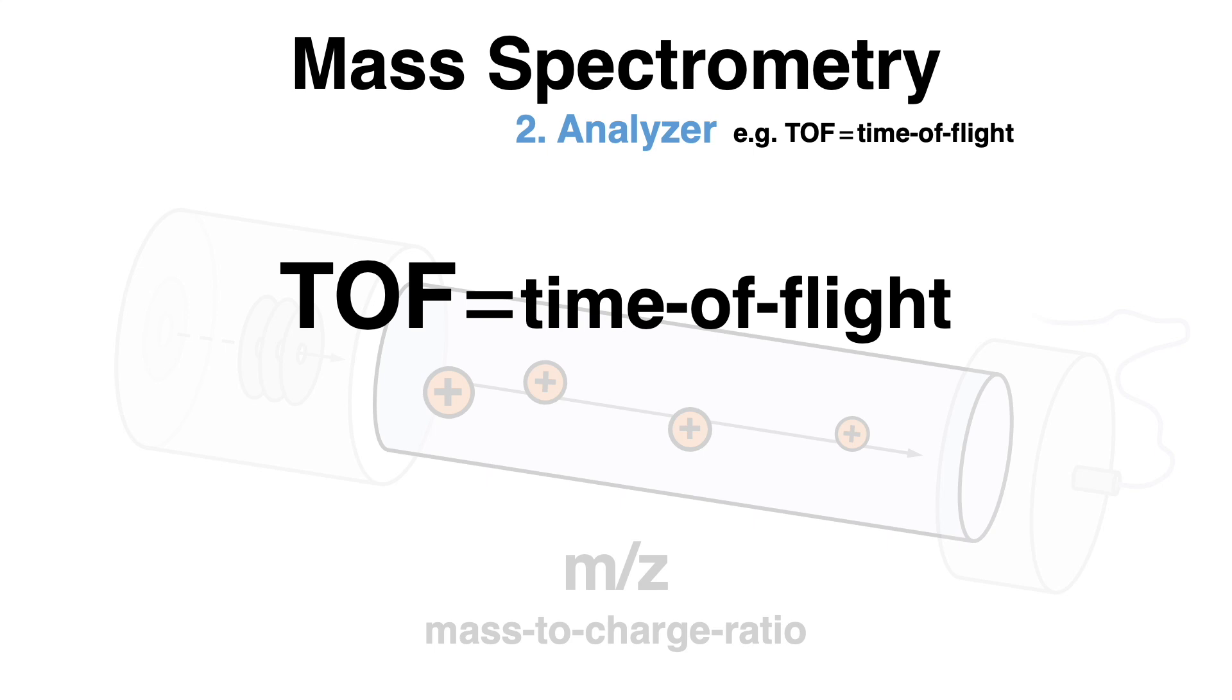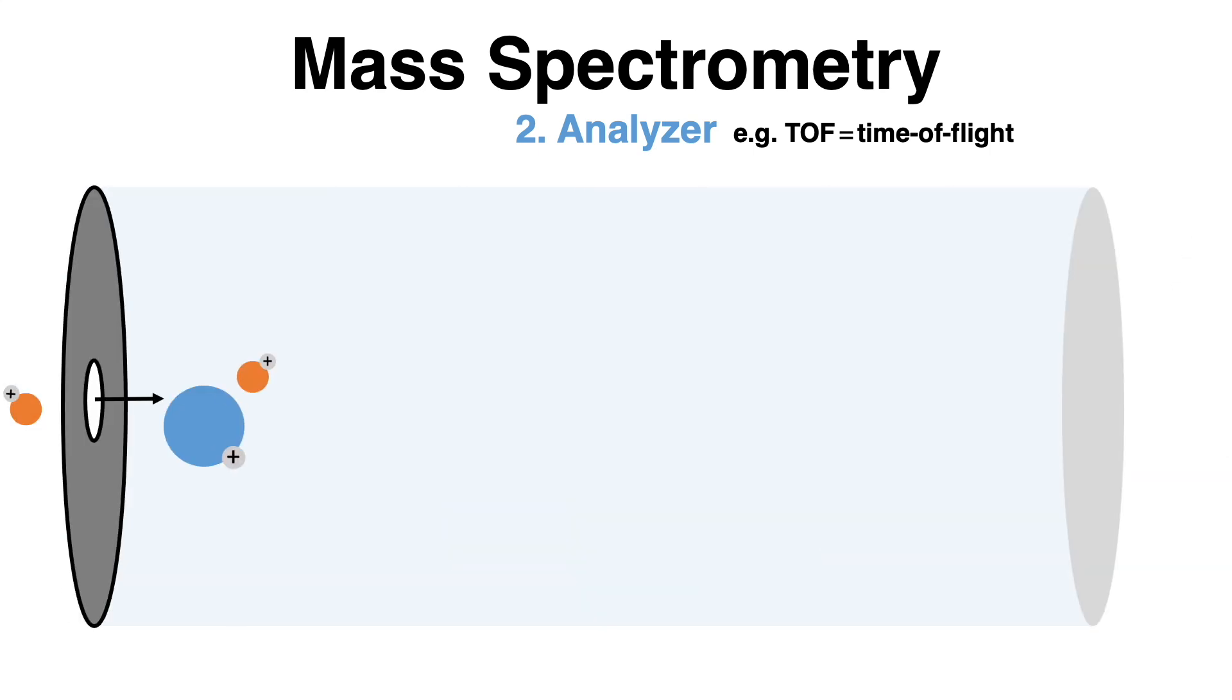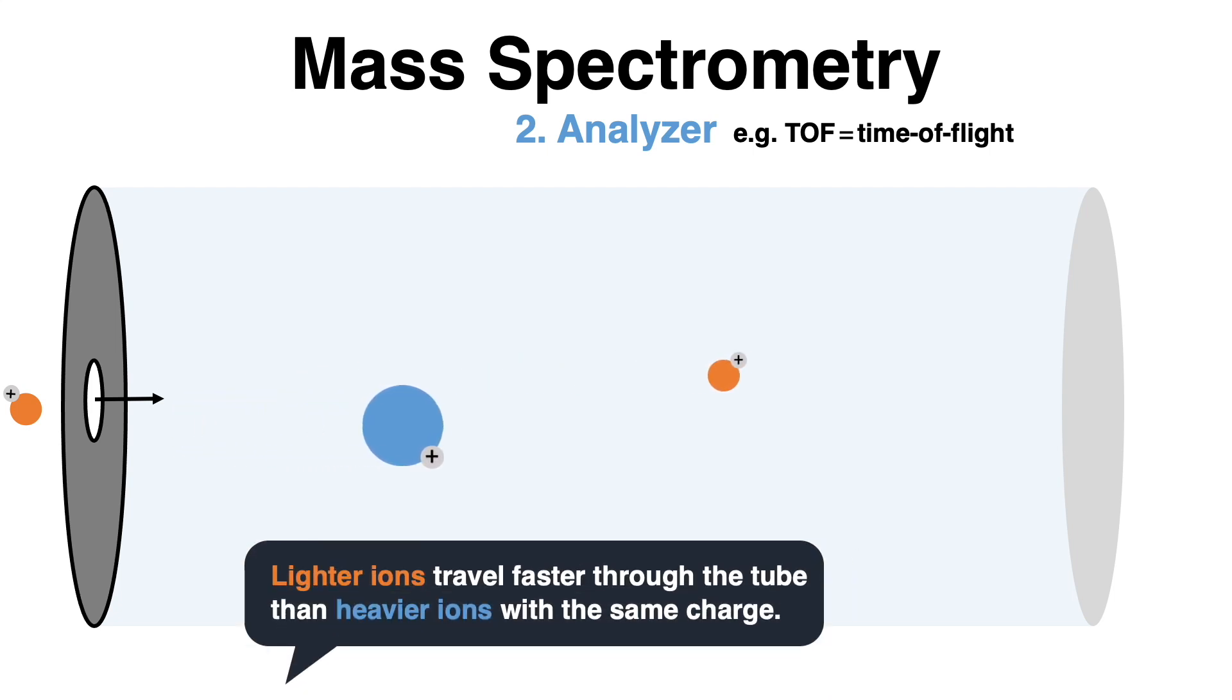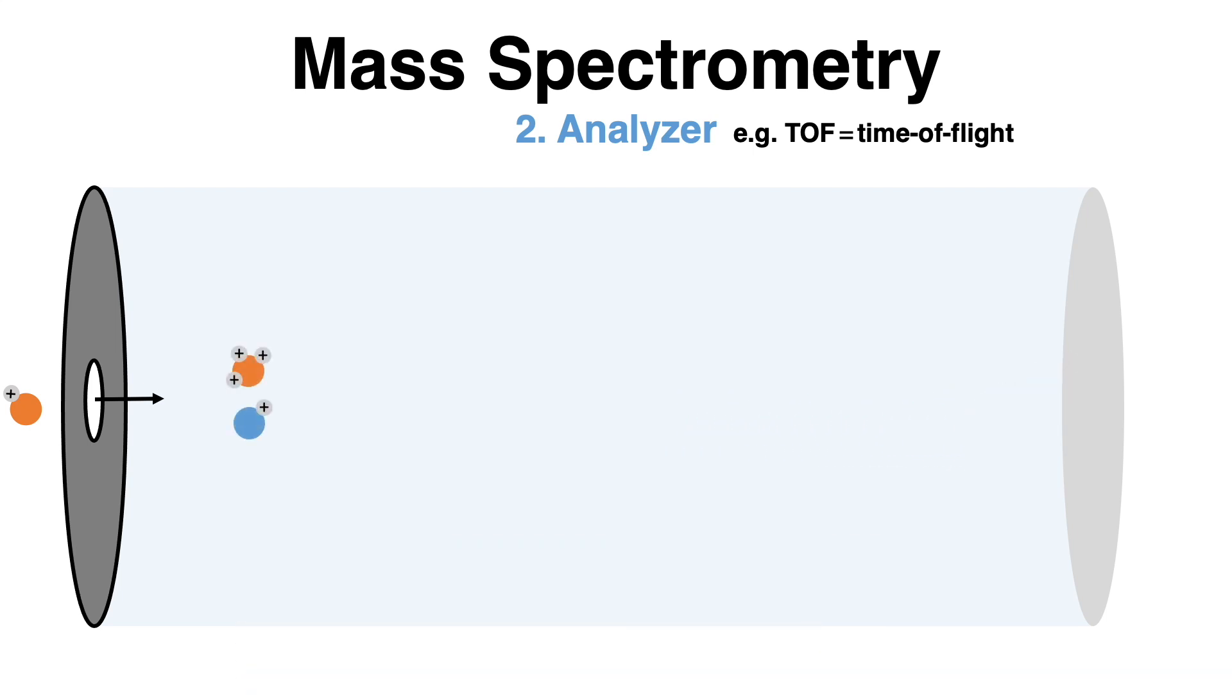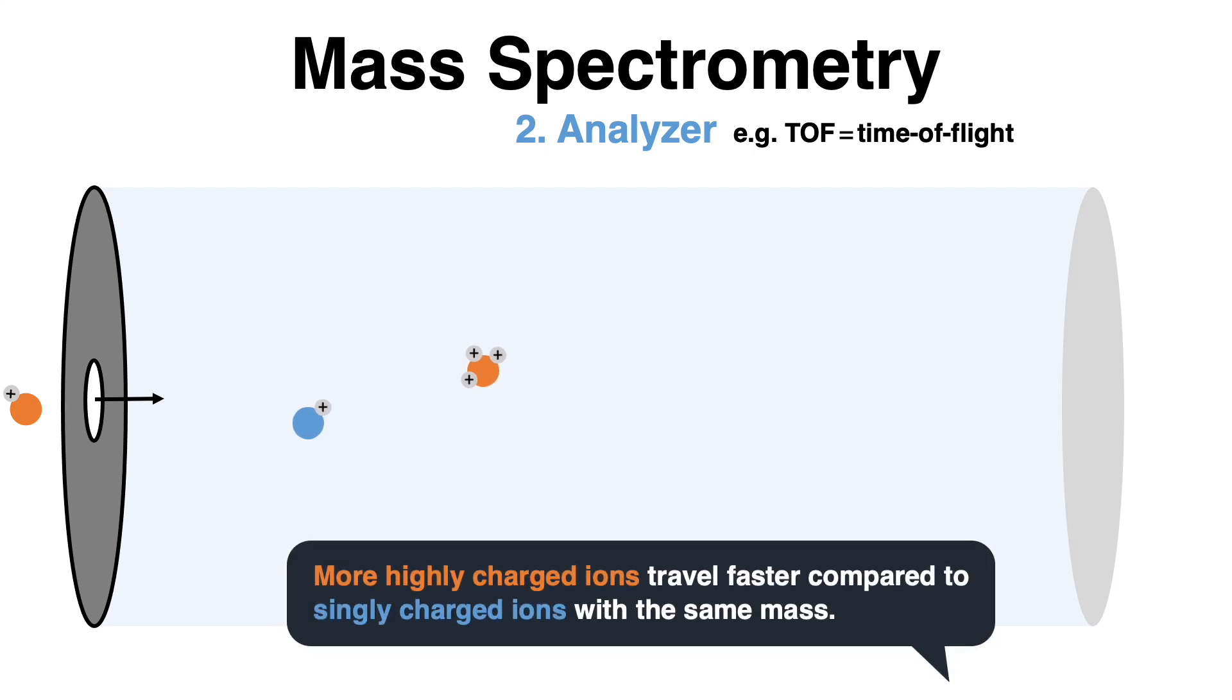The principle is straightforward. The ions are accelerated in an electric field with a known voltage, and ions with the same charge gain the same kinetic energy. Consequently, lighter ions travel faster through the flight tube than heavier ions with the same charge, and more highly charged ions travel faster compared to singly charged ions with the same mass.